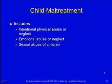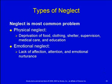Moving on to child maltreatment. This can be intentional physical abuse or neglect, emotional abuse or neglect, and sexual abuse. Neglect is the most common. Physical neglect means depriving a child of food, clothing, shelter, supervision, medical care, or education. Emotional neglect is a lack of affection, attention, and emotional nurturance — not giving the child what they need in those emotional areas.